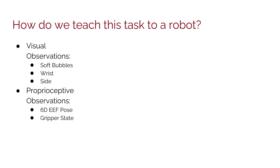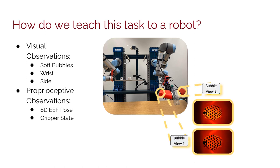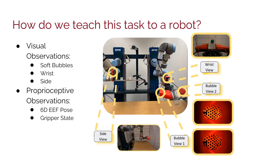How do we teach this task to a robot? This task requires the robot to correctly predict the in-hand rotation of a transparent bottle, relying mostly on the contact patch with the Soft Bubble. It must then correctly rotate in order to upright the bottle for placement. We use an end-to-end learning-based approach called Diffusion Policy to use observations for predicting robot actions. The observations of the robot task include two views from the Soft Bubble, the left and the right, the wrist view, the side view, as well as the 6D end-effector pose in the gripper state.